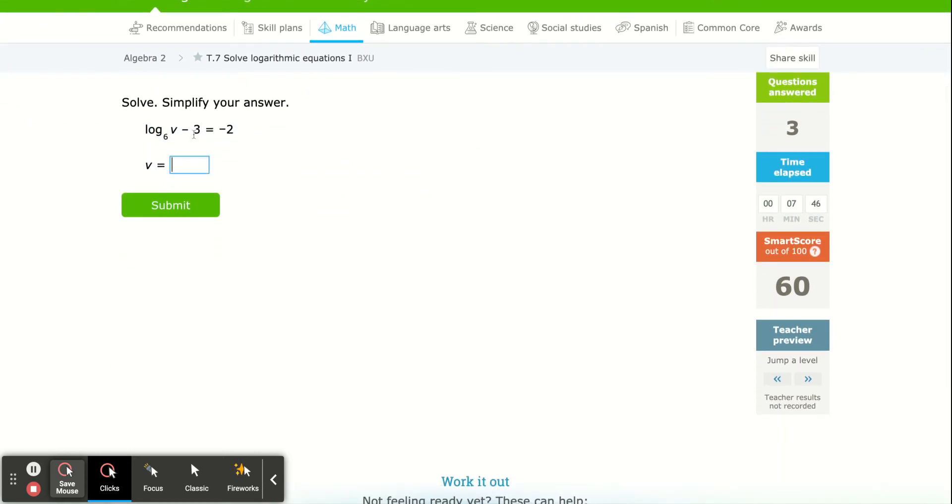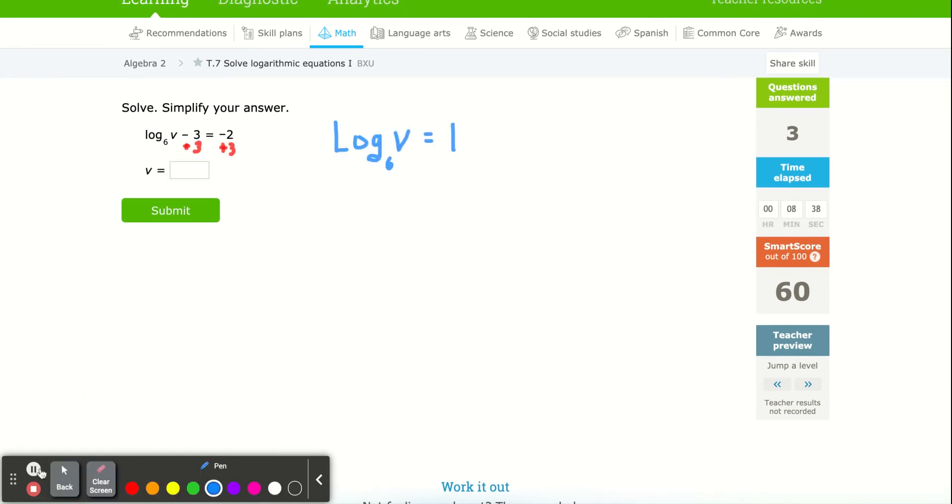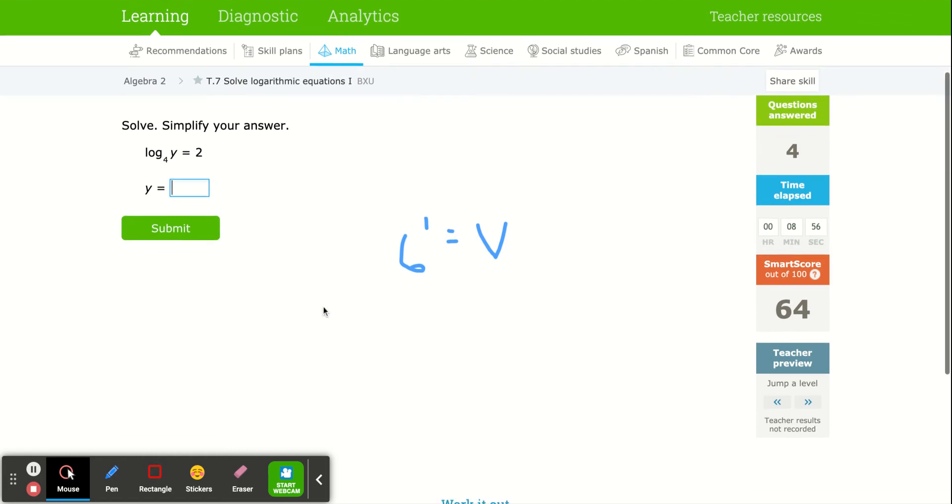Here we have to do a little rearranging to get the logarithm by itself before converting. I've added 3 to both sides to isolate the log. Now I know it's 6 to the 1 power equals v, or v is 6. Always isolate the logarithm.